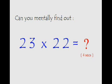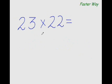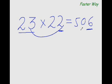Can you mentally find out what is 23 times 22 in 4 seconds? Your time starts now. Your answer is 506.